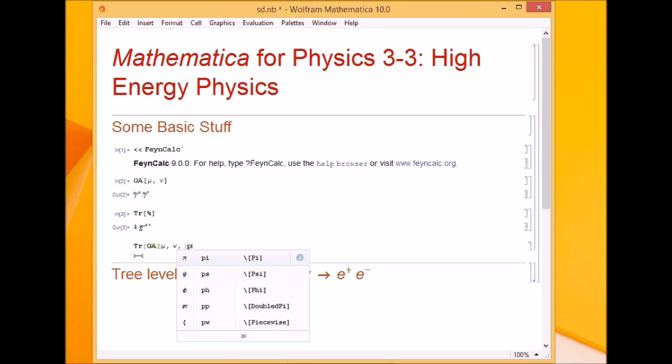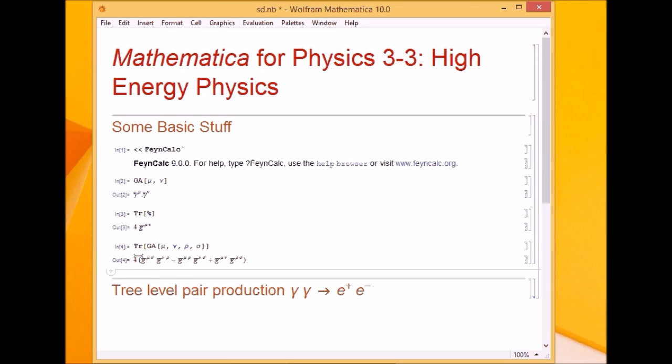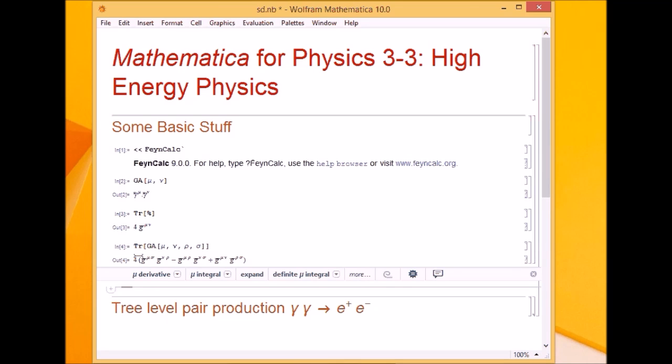For example, if I wanted to calculate trace of four gamma matrices, if you've done the calculation, it takes a while. FeynCalc package does the job for us. So if I have mu, nu, rho and sigma, it calculated and gave us the result.